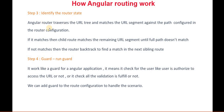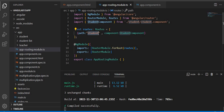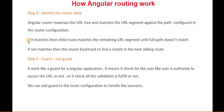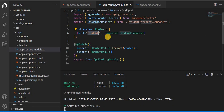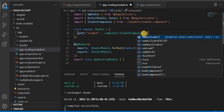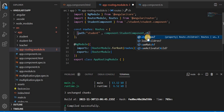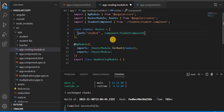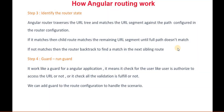Next is identifying the router state. The Angular router traverses the URL tree and matches the URL segments against the defined path. If it matches, child routes then match the remaining URL segments until the full path is matched. For example, if the student page has another child page with specific user information, it checks along that path until the full path is matched.